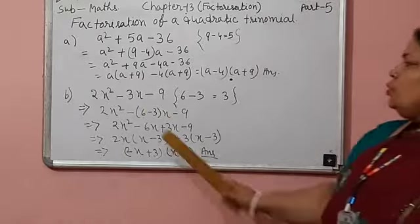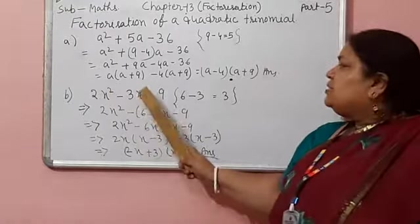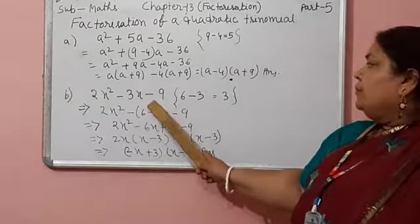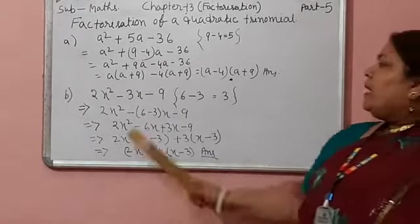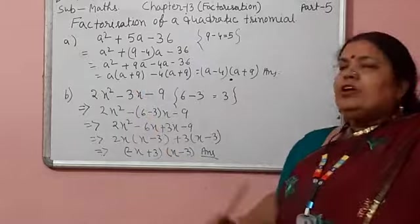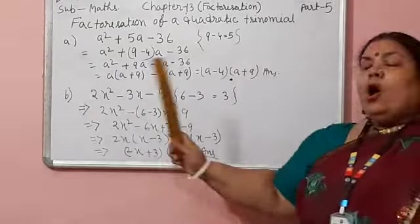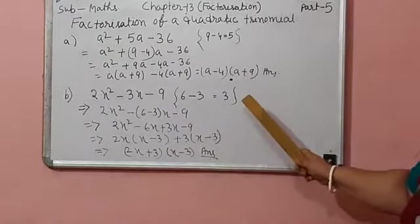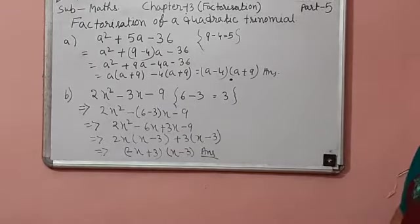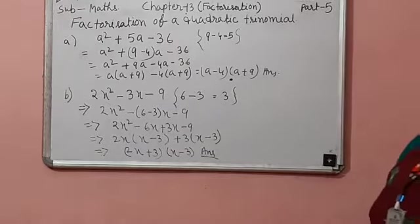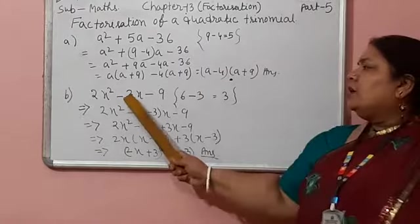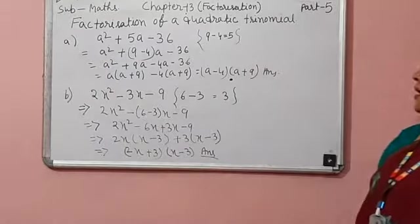Now number b. 2x square minus 3x minus 9. Here you multiply 2 and 9. That means we got 18. 9 into 2 is 18. Or 6 into 3 also 18. When we subtract 6 and 3 we got 3. So we write like this.